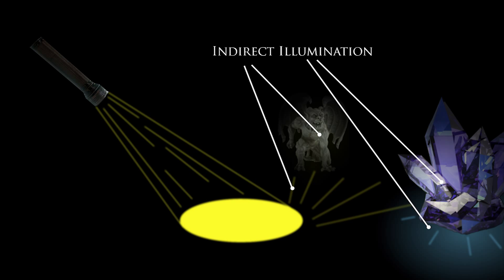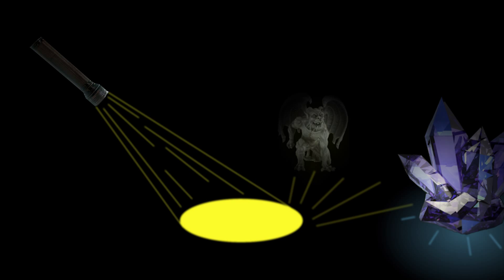The two basic phenomena previously described together constitute — albeit in a very boiled-down manner — what is known as global illumination. However, in the virtual world of video games, where memory concerns and processing power unfortunately dictate much of what is possible, things don't exactly work that way.